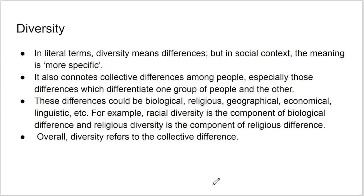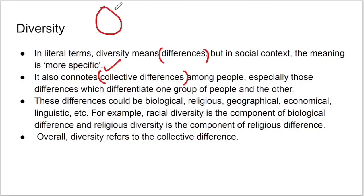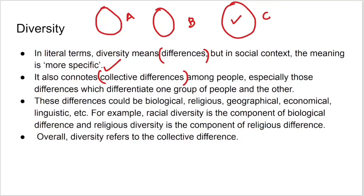The second feature is diversity. In social context, the meaning is more specific. It connotes collective differences among people, especially those differences which differentiate one group from another. Diversity doesn't mean I am different from you individually — we are talking about groups. Group A, Group B, Group C — all these groups have differences among themselves. They are living in the same society together. This is called diversity.